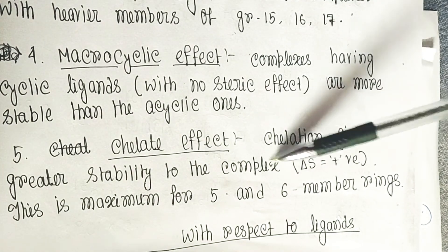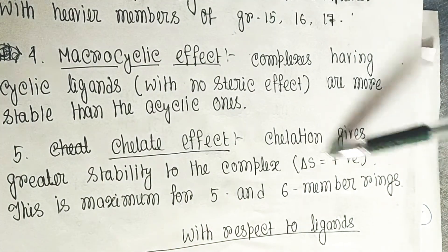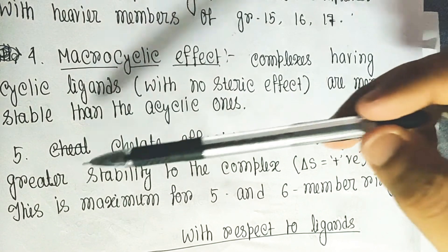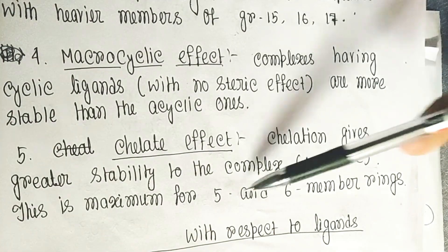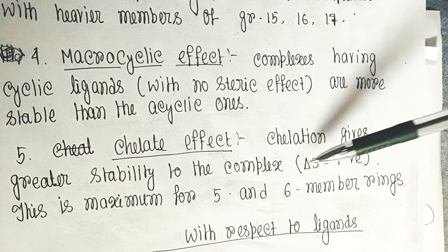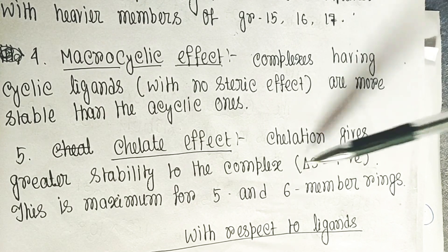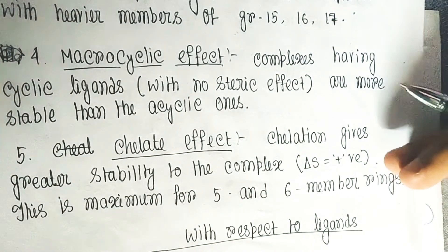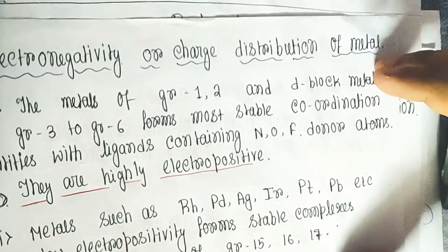Chelation is more favored because delta S is positive — the entropy factor is positive for the chelation effect. As delta S is more positive, delta G becomes more and more negative, which means the complex is more stable. This chelation effect is maximum for five- and six-membered rings. These are the main reasons behind the stability of complexes with respect to the metal.